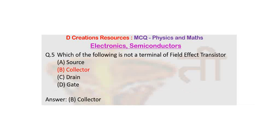So I hope you have got the correct answer. The correct answer is B, which basically collector is the correct answer and the option is B. And I am sure you are aware that field effect transistor is a three terminal device and names of all the three terminals you can see here.